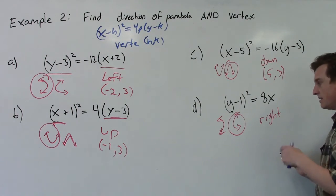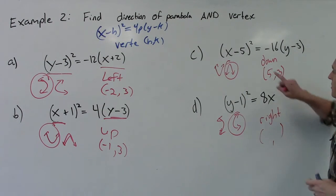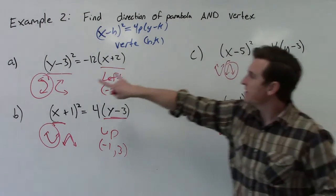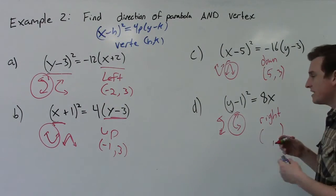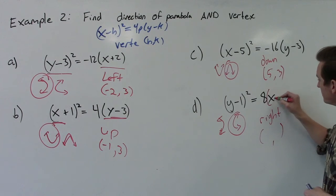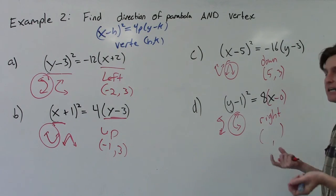Okay, for the vertex, we want the number inside with x. Now, notice on all these other examples, we had a number inside parentheses with x. But in this one, we don't. But we can kind of force it to have a minus 0, right? 8 times x is the same thing as 8 times (x - 0).